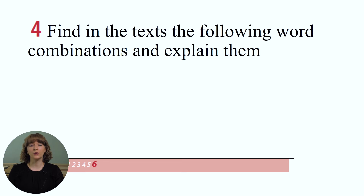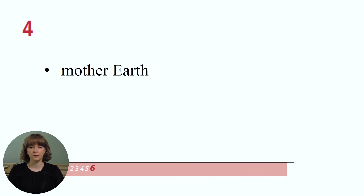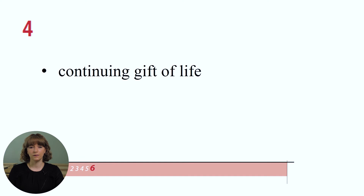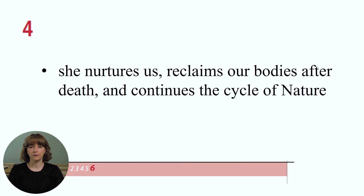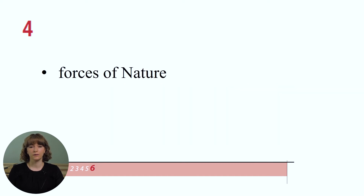In exercise 4, page 114, you are to find in the text the following word combinations and explain them: Mother Earth – continuing gift of life. Mother Earth gives food and shelter to all living things. She nurtures us, reclaims our bodies after death and continues the cycle of nature. Forces of nature.